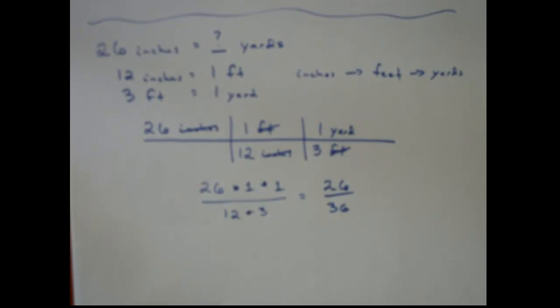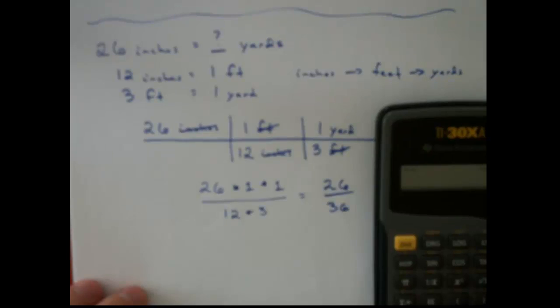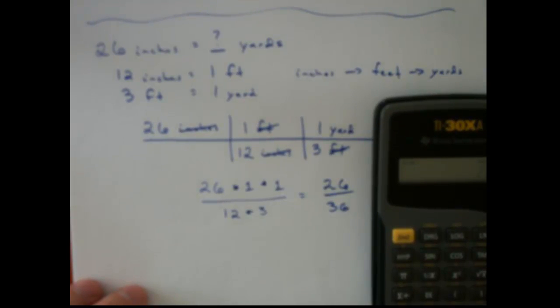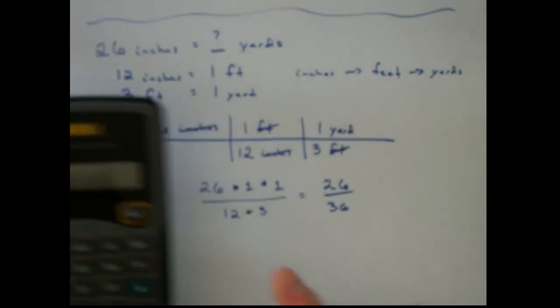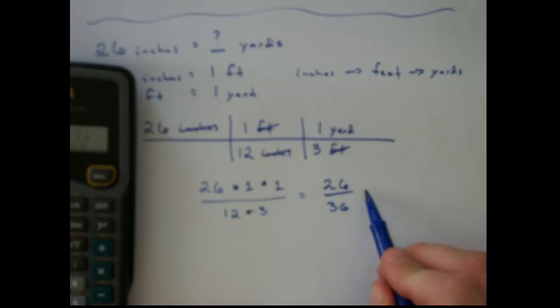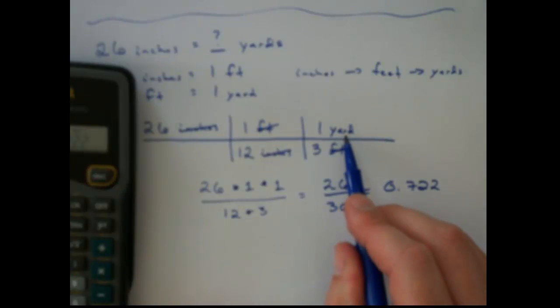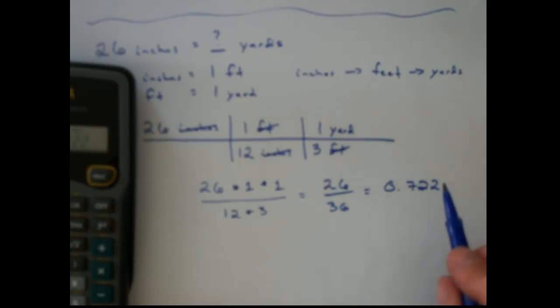And I'm not great at math or mental math, so I'm going to get out my calculator. If I type this in, 26 divided by 36, I should get 0.722. And now I've got to remember my units. So I get 0.722, and if I look up here, my last unit is yards.